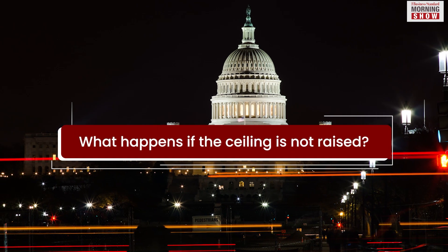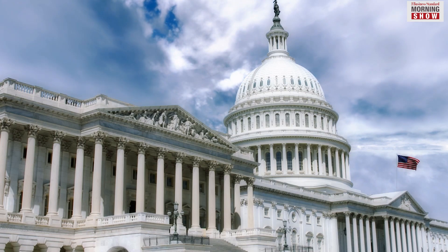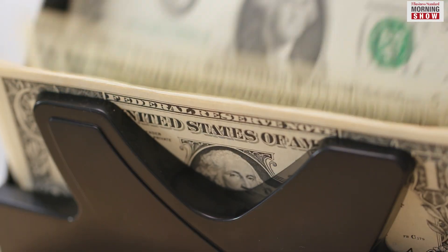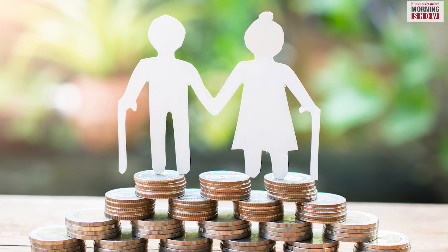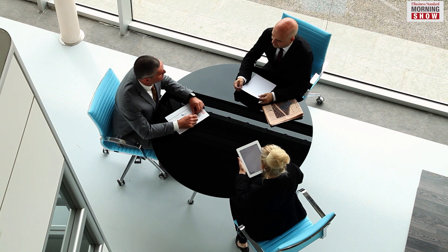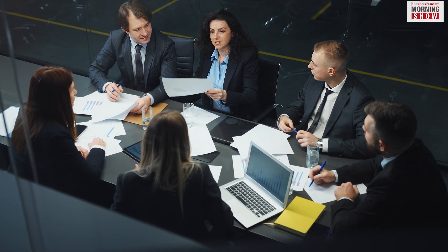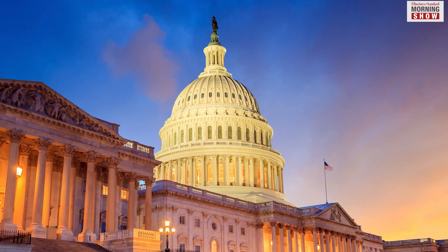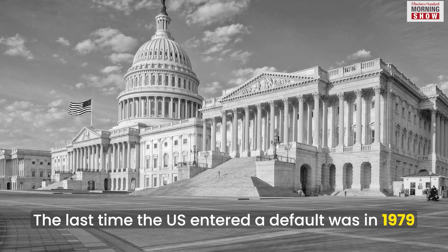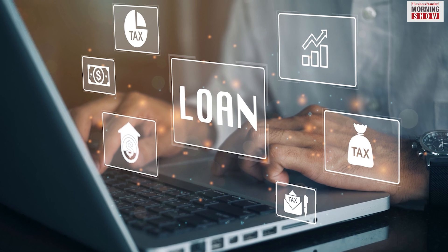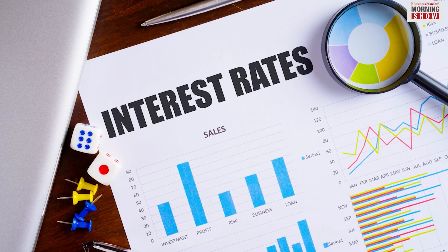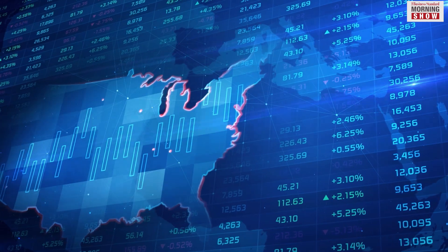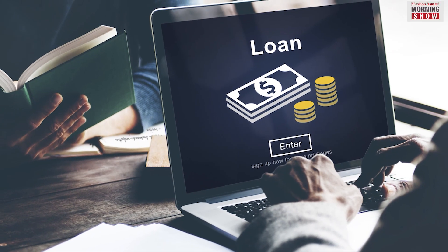What happens if the ceiling is not raised? If the ceiling is not raised, the US government cannot raise more money. It will not be able to pay salaries to federal and state employees or pensions to pensioners. Moreover, companies that depend on the government for funds cannot borrow more. The US government may also be unable to pay the interest due on its debt, putting the country into default. The last time the US entered a default was in 1979. A long-term impact would be that investors will start seeing US debt as risky and raise interest rates, trickling down to make all types of borrowing costlier.